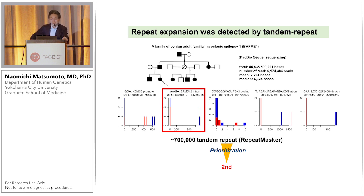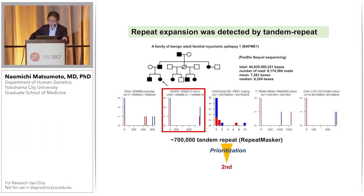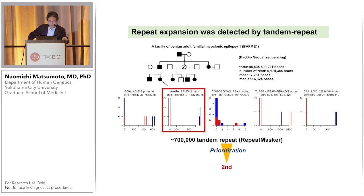Here is one example of how Tandem Genotype can pick up expanded repeats. We used an already-solved family where we had already detected the cause of repeat expansion. We applied Tandem Genotype to 44 gigabytes of PacBio sequencing data from this family. The second-ranked prioritization clearly showed the repeat expansion in the SOME D12 intronic area — this is the causative expansion. We confirmed that Tandem Genotype can be used for this kind of analysis.